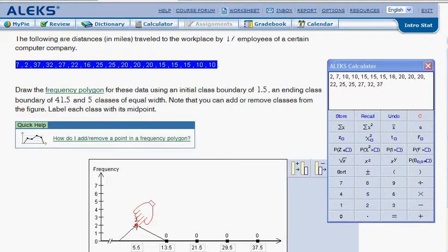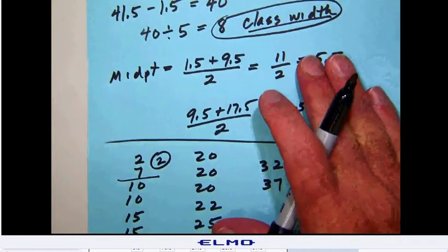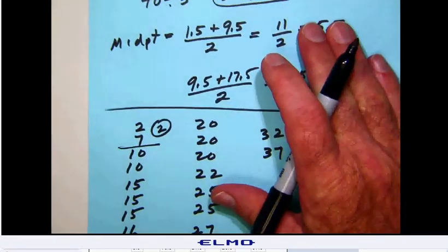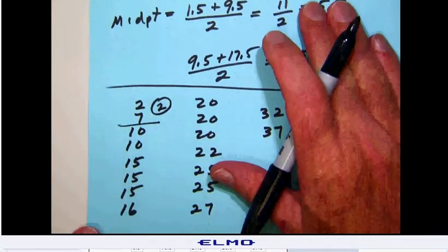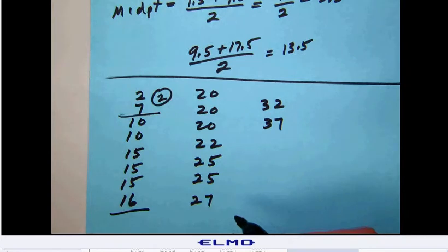Moving back to our list, our second frequency cut or our frequency boundary is going to be from 9.5 to 17.5, and so the 17.5 is going to cut between the 16 and the 20. There will be 1, 2, 3, 4, 5, 6 values in there.